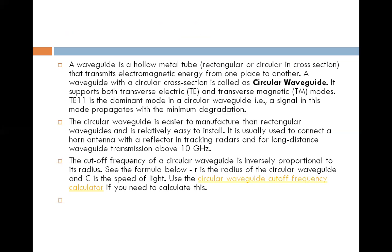The circular waveguide is easier to manufacture than rectangular waveguide and is relatively easy to install. That is a basic advantage. It is usually used to connect a horn antenna with a reflector in tracking radars and for long distance waveguide transmission above 10 GHz. The cutoff frequency of circular waveguide is inversely proportional to its radius.